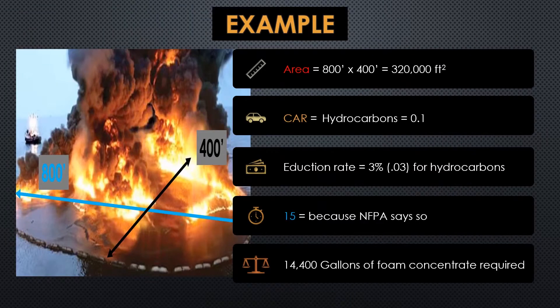It's much easier to explain with an example. In this example, I'm estimating that this particular crude oil fire is 800 feet long by 400 feet wide. That's 320,000 square feet of surface area that I'm trying to smother using my foam. Just multiply 8 times 4 and add 4 zeros — that's 320,000 square feet. Your critical application rate for crude oil is 0.1, your reduction rate is 3% or 0.03, and then I need to do all of that for 15 minutes. That means I'm going to end up using 14,400 gallons of foam concentrate.